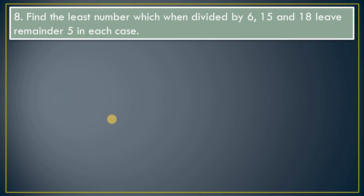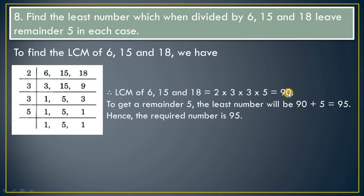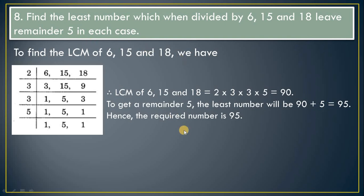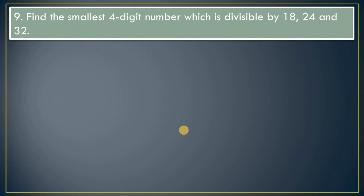Question 8: Find the least number which when divided by 6, 15, and 18 leaves remainder 5 in each case. Use LCM because dividing by those numbers means the answer is larger. LCM = 90. Since remainder is 5 in each case, simply add 5: 90 + 5 = 95. Hence the required number is 95.